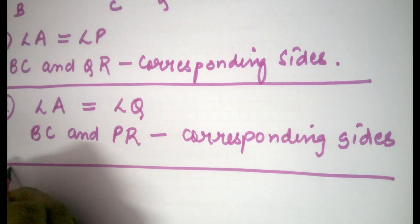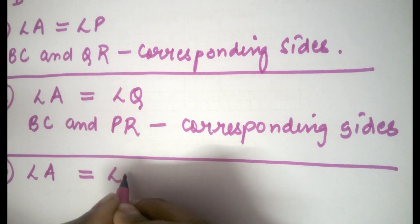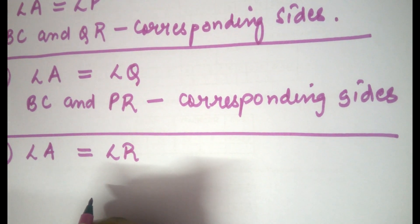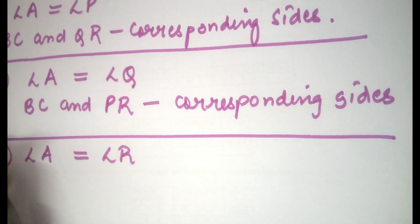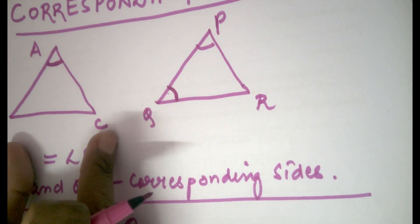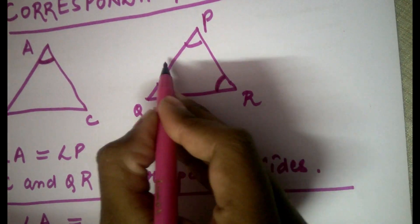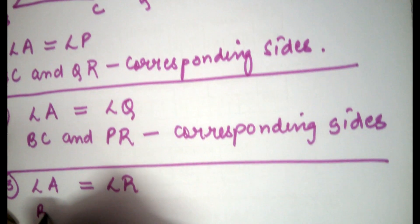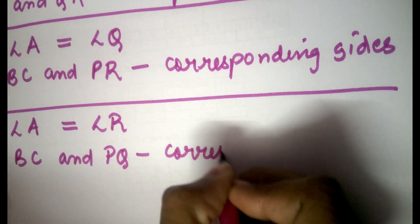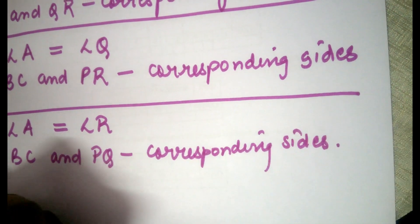In a third example, we assume angle A equals angle R. The side opposite to angle A is BC and the side opposite to angle R is PQ. Hence, BC and PQ are the corresponding sides. In this way we find our corresponding sides.